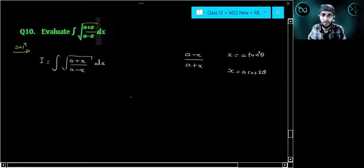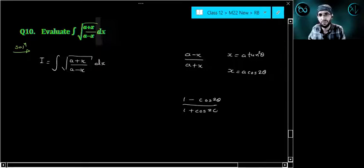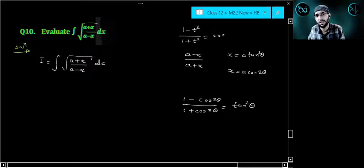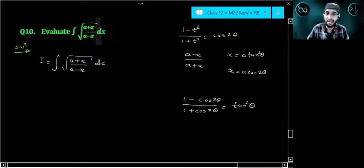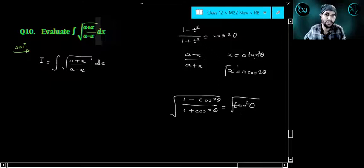If I choose this one, then 1 upon 1 plus cos 2 theta which gives me some response. You have tan square theta equals 1 minus tan square upon 1 plus tan square which is what your ultimate aim is. Your aim is to remove this square root.